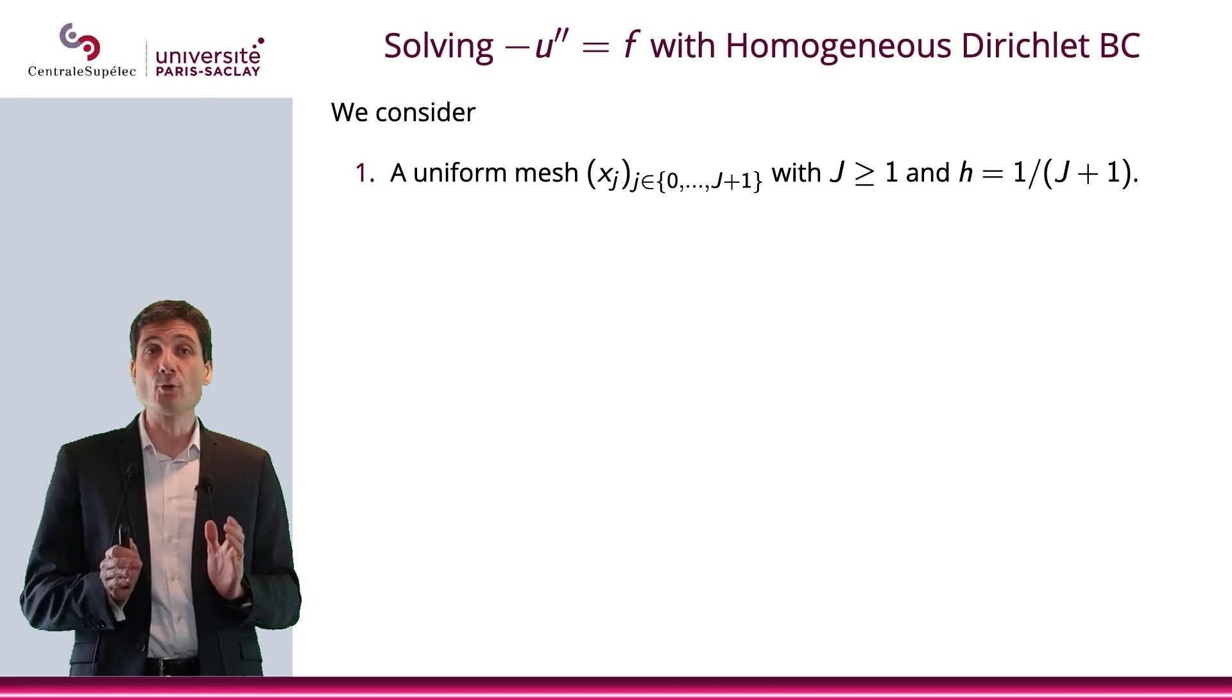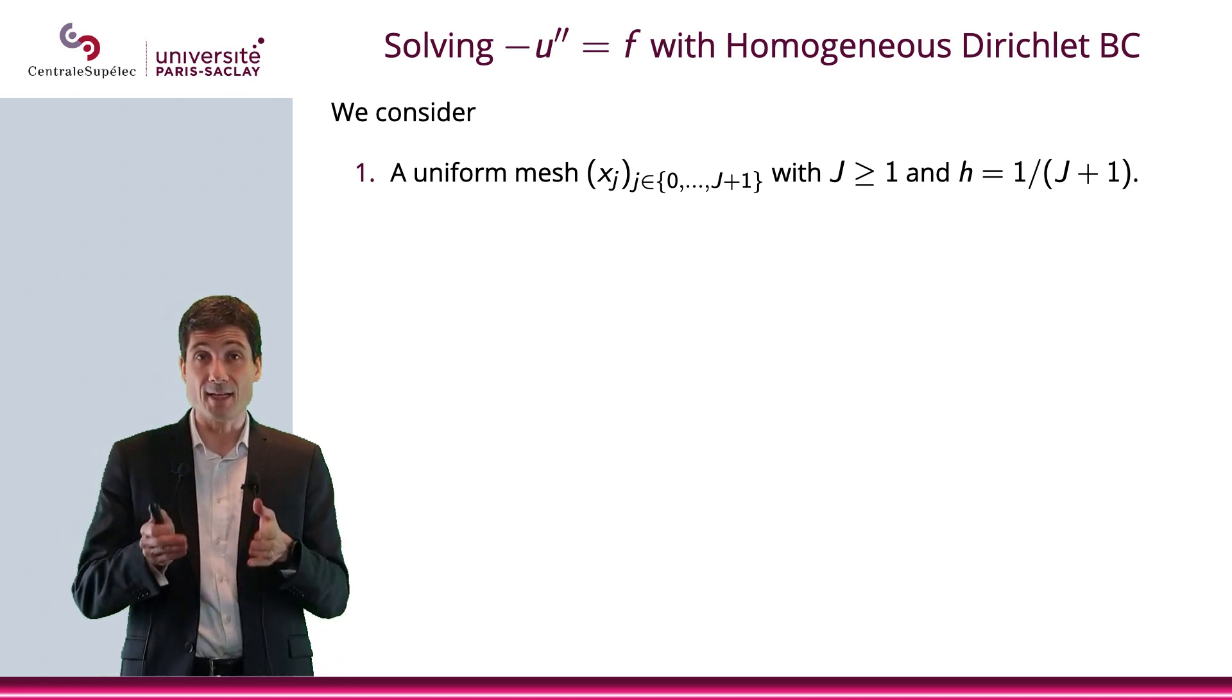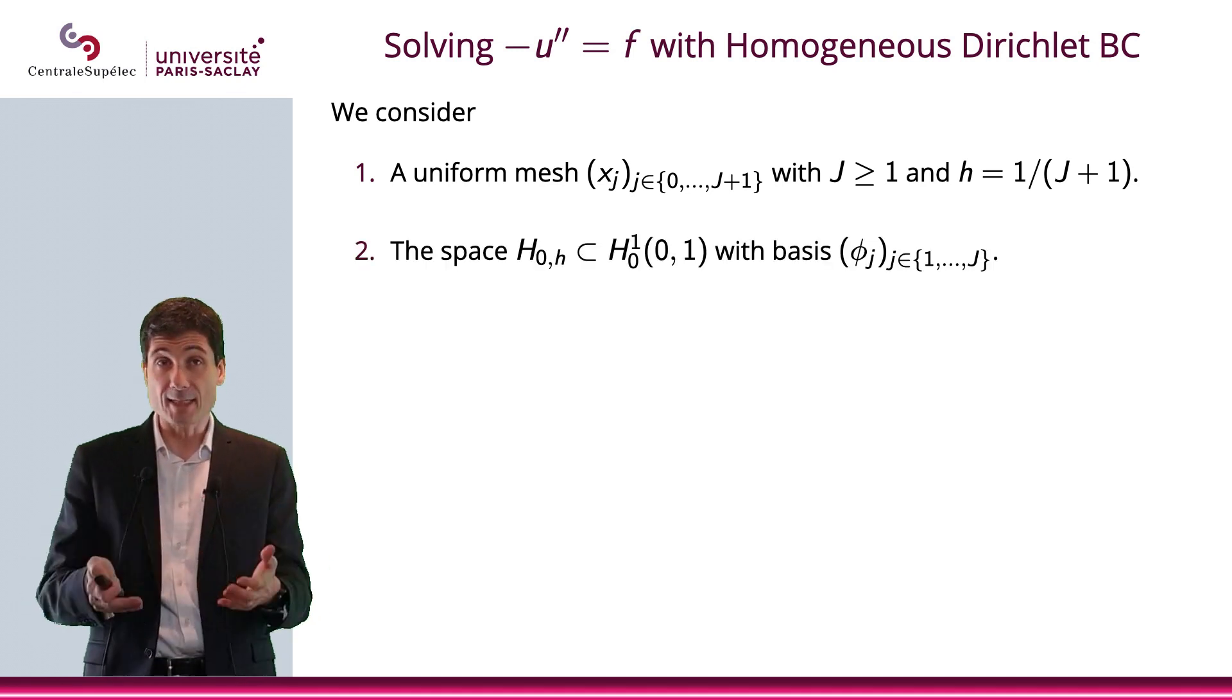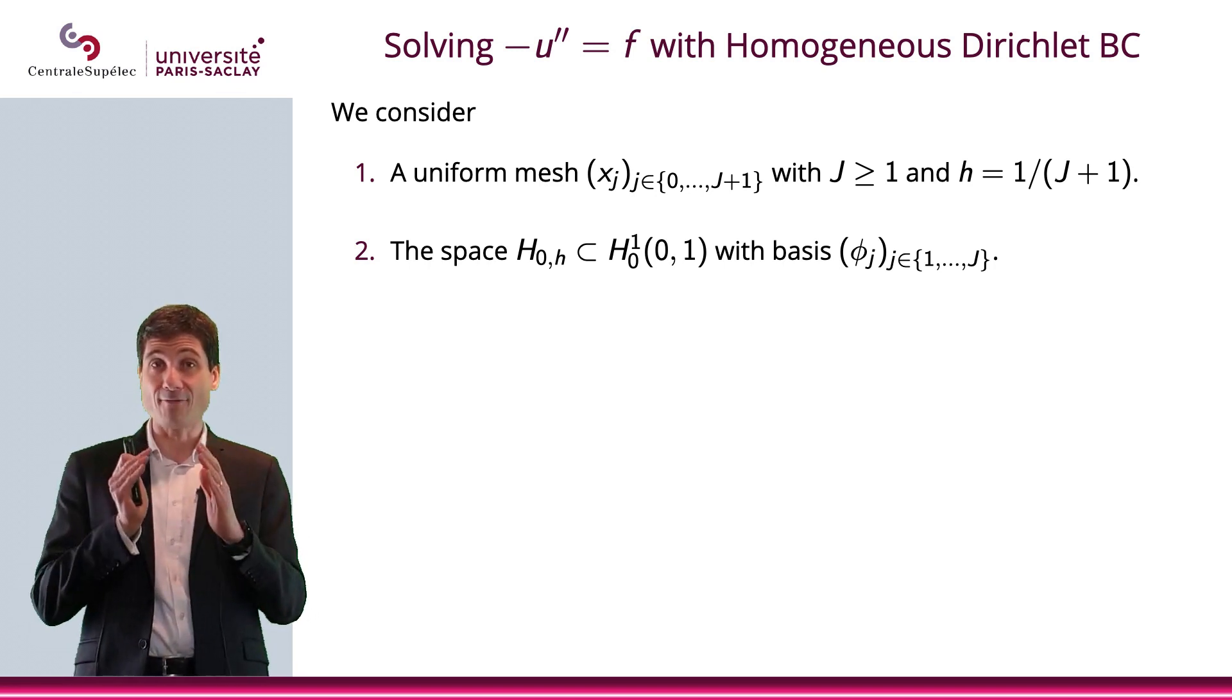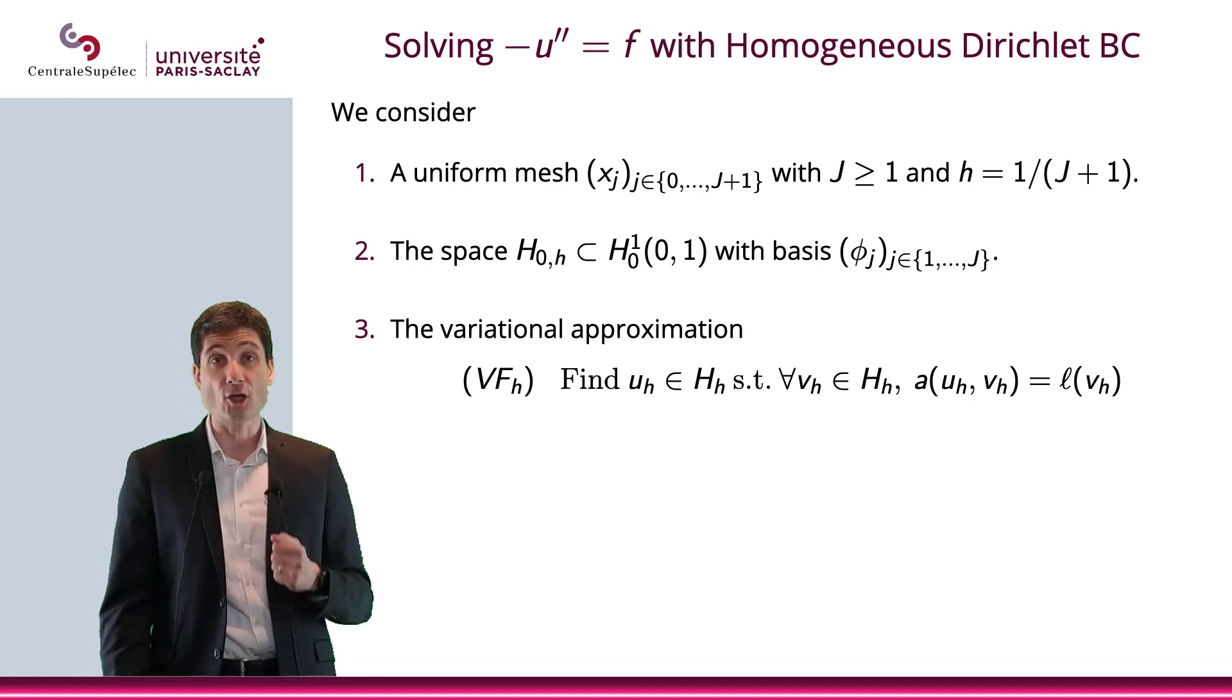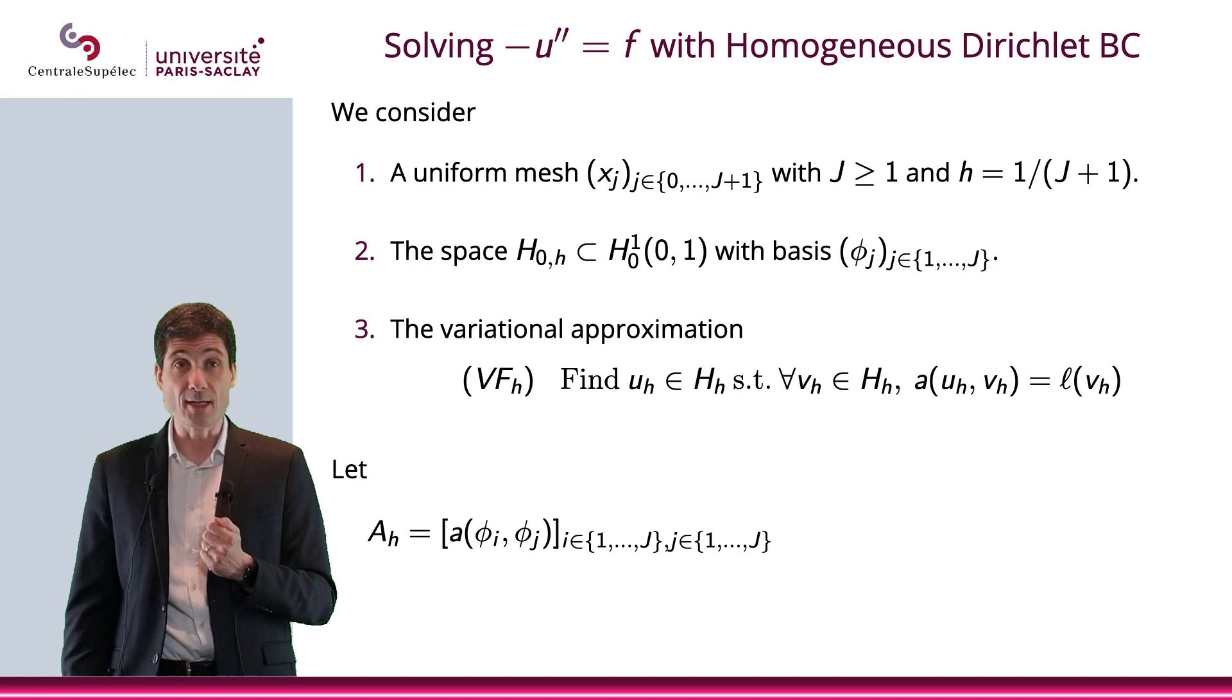Now, we consider a uniform mesh just to simplify things. And we will consider J, the number of nodes inside of our interval. h will be 1/(J+1). We are going to consider the space H_{0,h}, which is included in H^1_0(0,1), with the basis that we just defined earlier with the hat functions. And the variational approximation: find u_h in H_{0,h} such that for all v_h in H_{0,h}, A(u_h, v_h) = L(v_h).